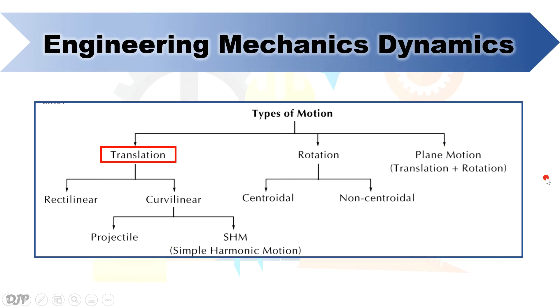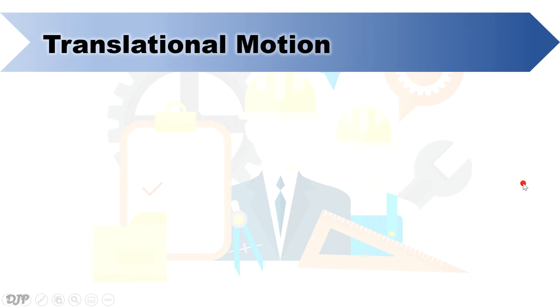First, let's focus on translational motion. Take note that under it we have rectilinear motion and curvilinear motion, which we will also tackle shortly afterwards. So what is translational motion? It is simply a motion of a particle or rigid body from one point in space to another. In this motion, the body simply shifts its location.